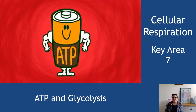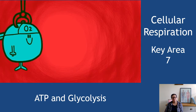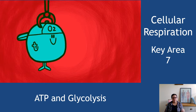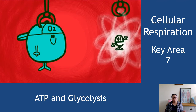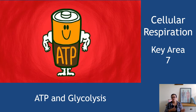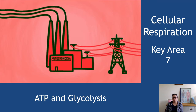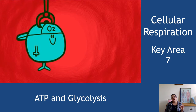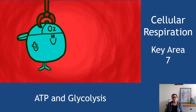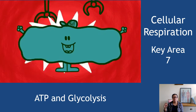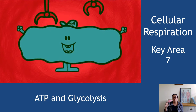This is Key Area 7, which is cellular respiration, and we're going to be focusing on ATP and glycolysis in this video. We'll be looking at the citric acid cycle in the second video, and there's a third video focusing on the electron transport chain. So we've tried to divide it up into small, manageable chunks. There is significantly more detail in this than in National 5 in terms of the chain of reactions that occurs in both fermentation and aerobic respiration.